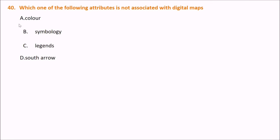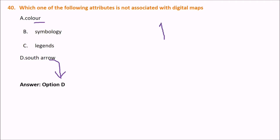Which one of the following attributes is not associated with digital maps? The options are color, symbology, legends, and south arrow. The answer is south arrow — because in a map you show the north arrow, not the south arrow.